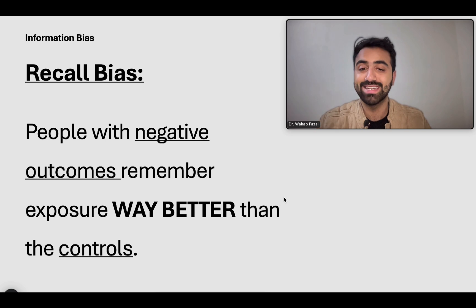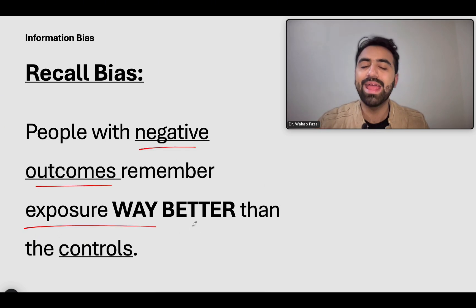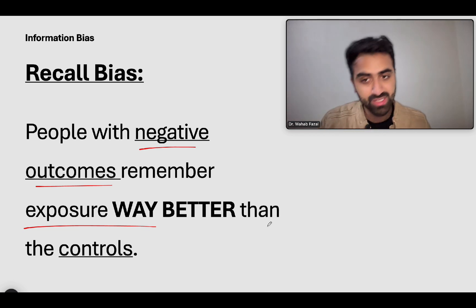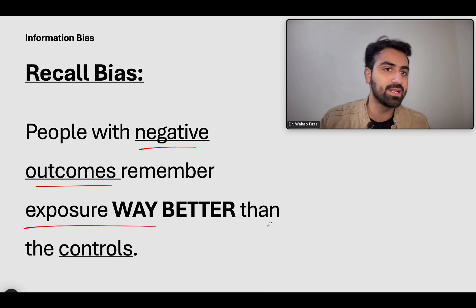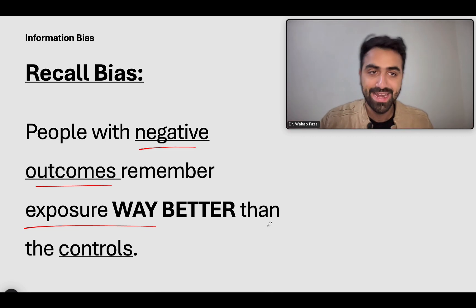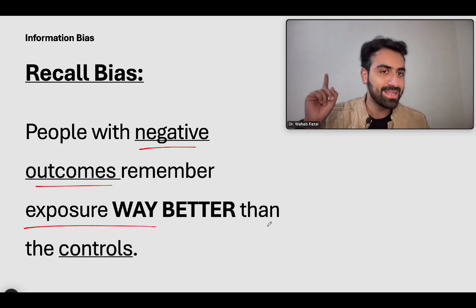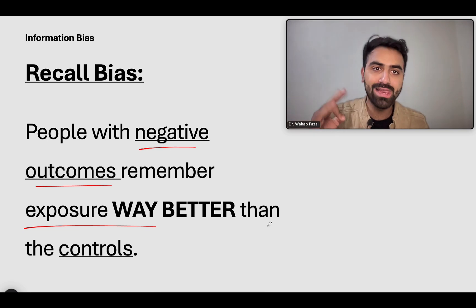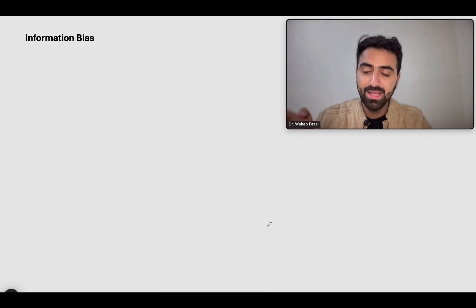That is the problem with recall bias in case-control studies: people with negative outcomes remember the exposure way better. People with lung cancer remember that one cigarette from 25 years ago. People with diabetes say they ate a lot of sugar even though the diabetes might be genetic. People with the disease remember the bad thing they once did. That's the problem — recall bias is self-explanatory.